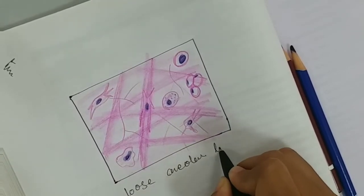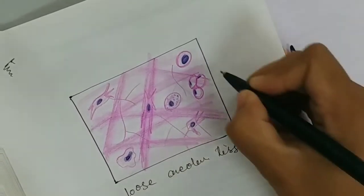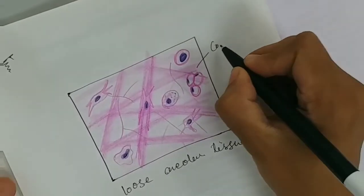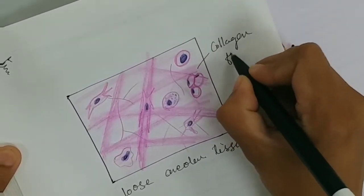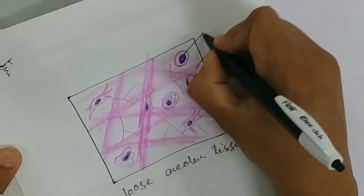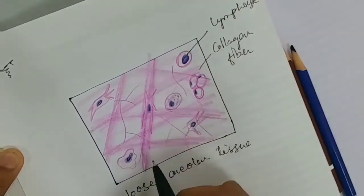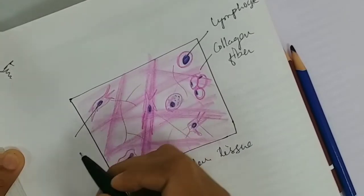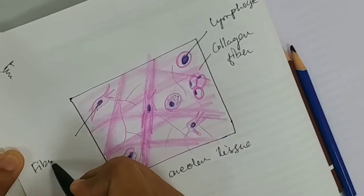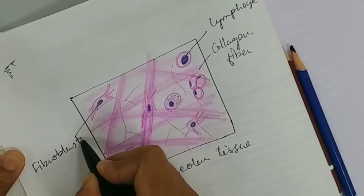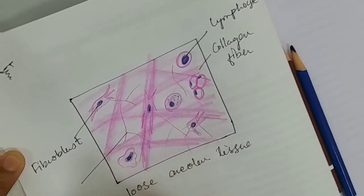Labeling: collagen fiber, lymphocyte, fibroblast, elastic fiber.